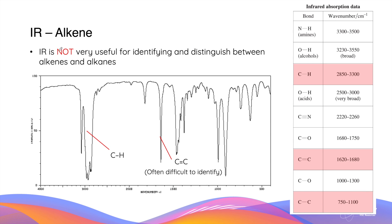Infrared spectroscopy is also not very useful for identifying alkenes or for distinguishing between alkenes and alkanes. This is because the types of bonds present in alkenes and alkanes are very similar, including the C–H bond and the C–C single bond. Even though alkenes contain a characteristic C=C double bond, on an infrared spectrum this is often difficult to identify as the signal is often narrow, small, and surrounded by multiple major signals.